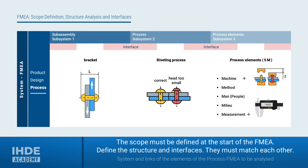At the beginning of an FMEA, the scope and limits must be defined. As an example, let's take a look at this bracket for a seatbelt buckle in a car. The assembly bracket is the system element we will focus on, making clear that we will not be looking at the seatbelt system or even the entire vehicle. The bracket, as an assembly, is part of a product, and there must be an interface between the bracket and the higher-level product. At this interface, the process FMEA must be aligned with the FMEA of the higher level assembly or the end product.